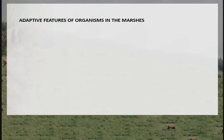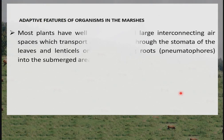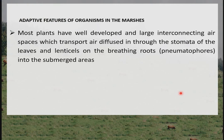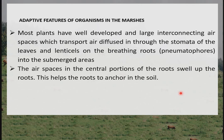Adaptive features of organisms in the marsh: most plants have well-developed and large interconnected air spaces. Through these structures, air can diffuse in through the stomata of the leaves and lenticel cells of the breathing roots called pneumatophores. Air diffuses from these openings into the submerged areas. Additionally, the air spaces in the central portion of the roots cause them to swell up, which brings about anchorage, enabling the plants to anchor very well in the soil.